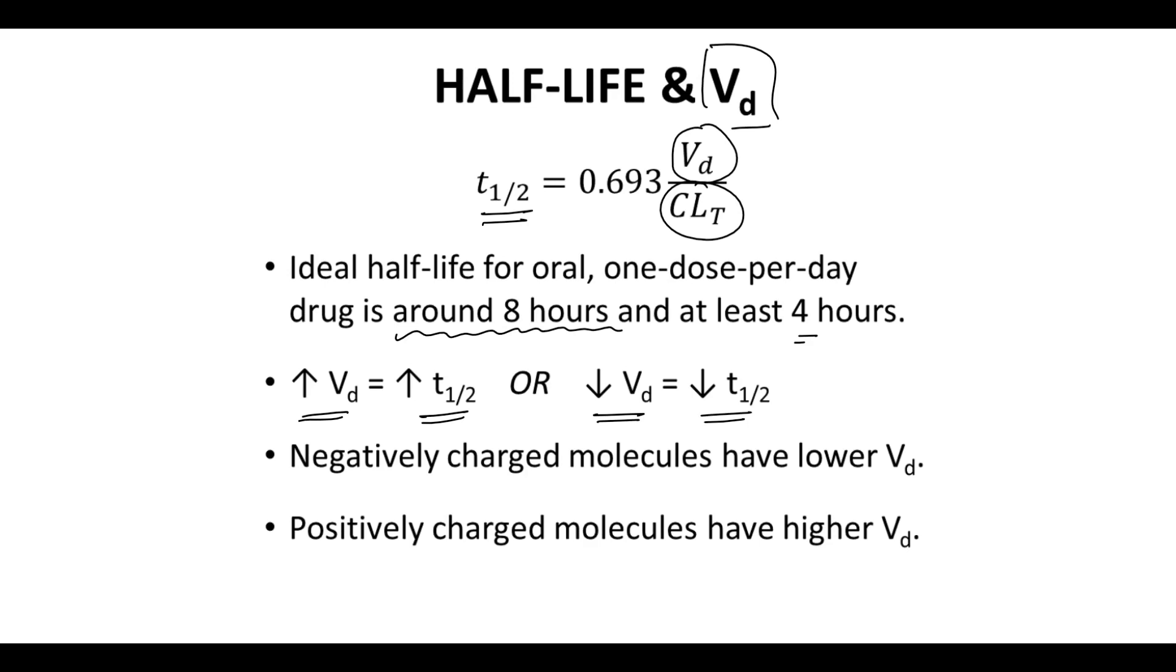The one property that seems to exert the greatest influence on volume of distribution is molecular charge. In general, anions have smaller VD values. Anions often bind to proteins that are found in the plasma, especially albumin. With an affinity for proteins in the plasma, anionic drugs tend to concentrate in the plasma and therefore have lower VD values.